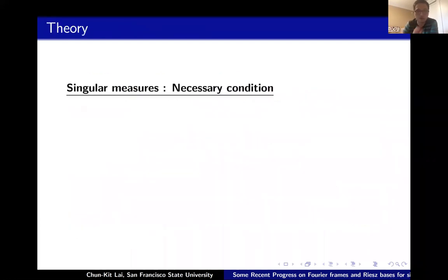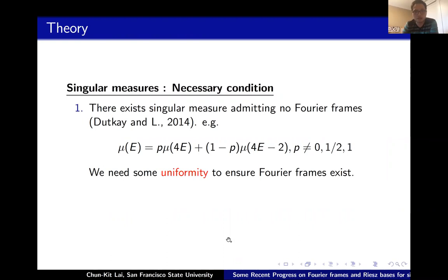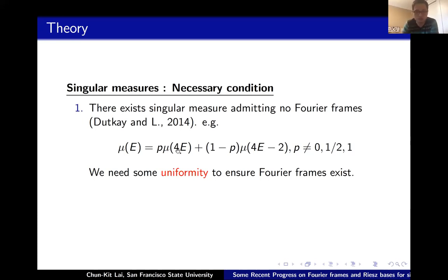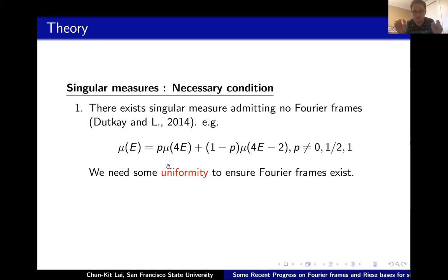Regarding necessary conditions: in 2014, Dutkay and I proved that there exist singular measures that don't even have a Fourier frame. One example: start with the middle-fourth Cantor measure but use unequal weights. If the left weight is too heavy relative to the right, you get a different decay rate. We proved there is a translational comparability condition: if you have a Fourier frame, pieces of the support with the same geometry should have comparable mass. Unequal weights violate this, so no Fourier frame exists.